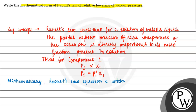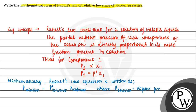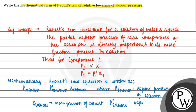Mathematically, Raoult's law equation can also be written as: the partial vapor pressure of the solution equals the vapor pressure of the pure solvent multiplied by the mole fraction of the solvent. Where P_solution is the vapor pressure of the solution, X_solvent is the mole fraction of the solvent, and P°_solvent is the vapor pressure of the pure solvent.